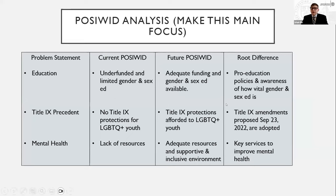Moving to the POSIWID — the purpose of a system is what it does — Uriah examines what these three systems are actually producing. Currently: the education system is underfunded with very limited gender and sex education; Title IX does not protect LGBT youth; and mental health resources are lacking.